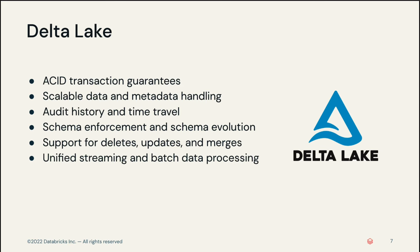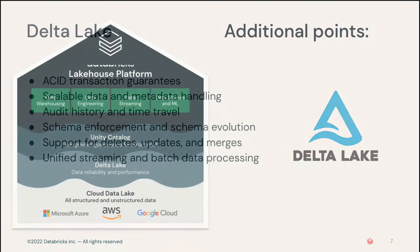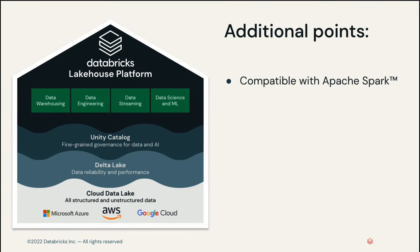And lastly, Delta Lake provides unified streaming and batch data processing, allowing data teams to work across a wide variety of data latencies — from streaming data ingestion to batch history backfill to interactive queries. Delta Lake runs on top of existing data lakes and is compatible with Apache Spark and other processing engines. Delta Lake uses delta tables, which are based on Apache Parquet, a common format for structuring data currently used by many organizations.